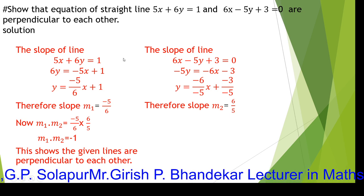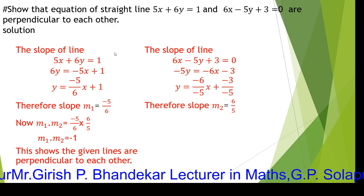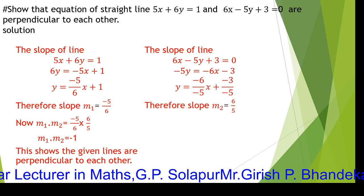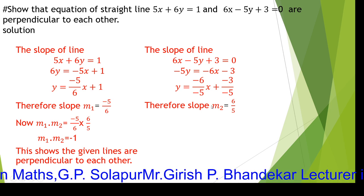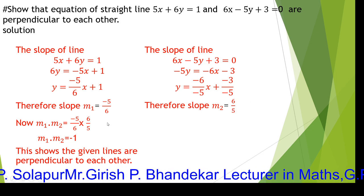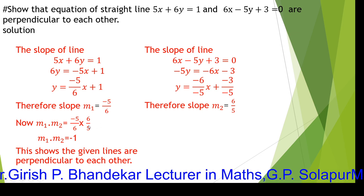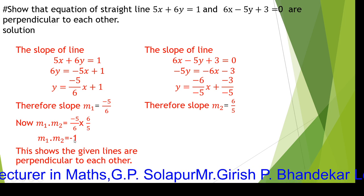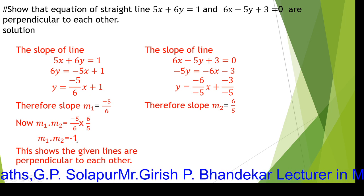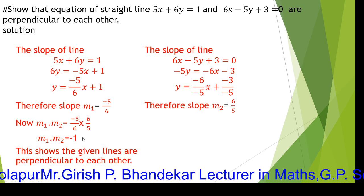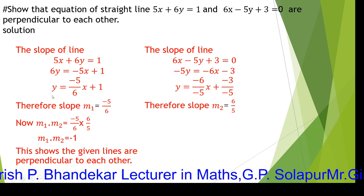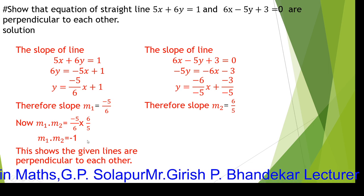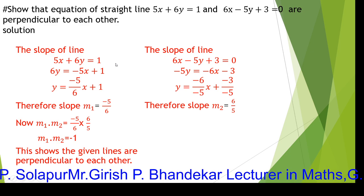Now we check whether the lines are perpendicular by taking the product of the two slopes. M1 times M2 equals minus 5 upon 6 multiplied by 6 upon 5. The 6s cancel and the 5s cancel, giving minus 1. Since the product of the two slopes equals minus 1, we can directly conclude these two straight lines are perpendicular to each other.